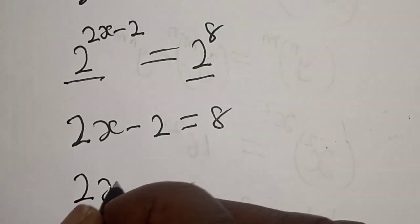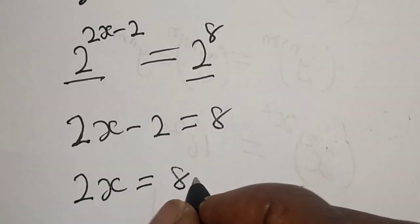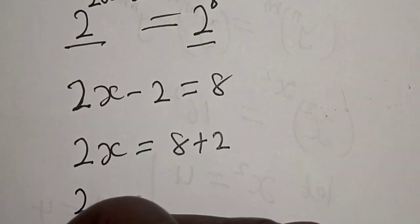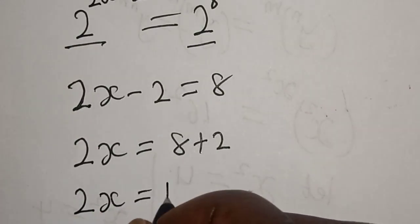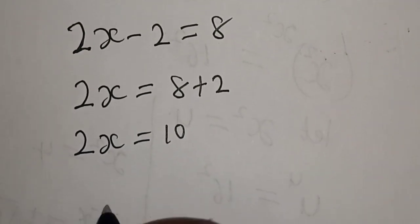Now we consider the exponents: 2x minus 2 is equal to 8. Then 2x is equal to 8 plus 2.